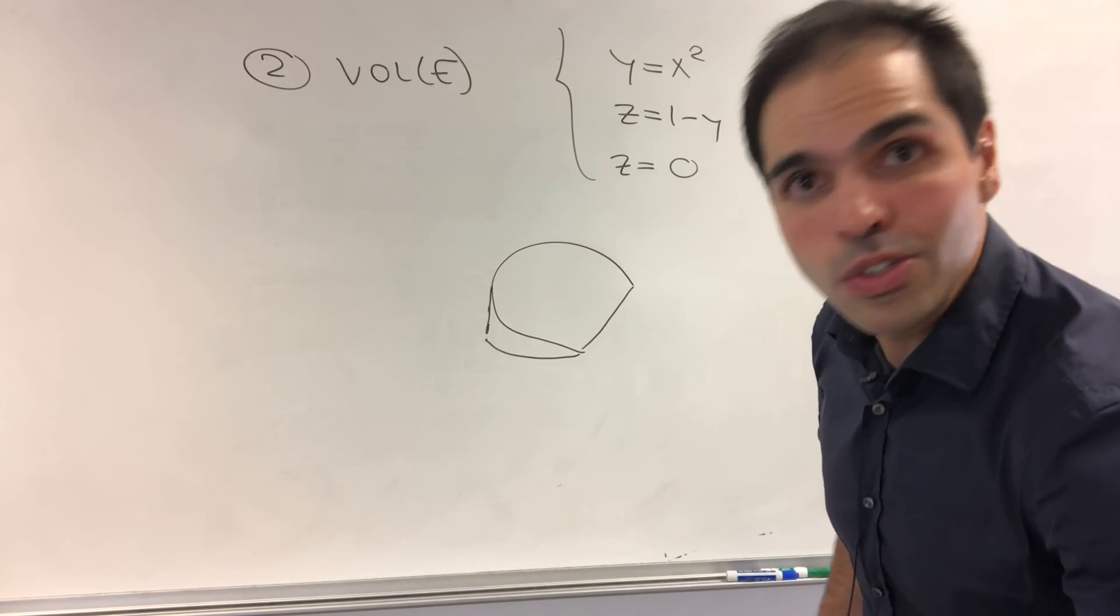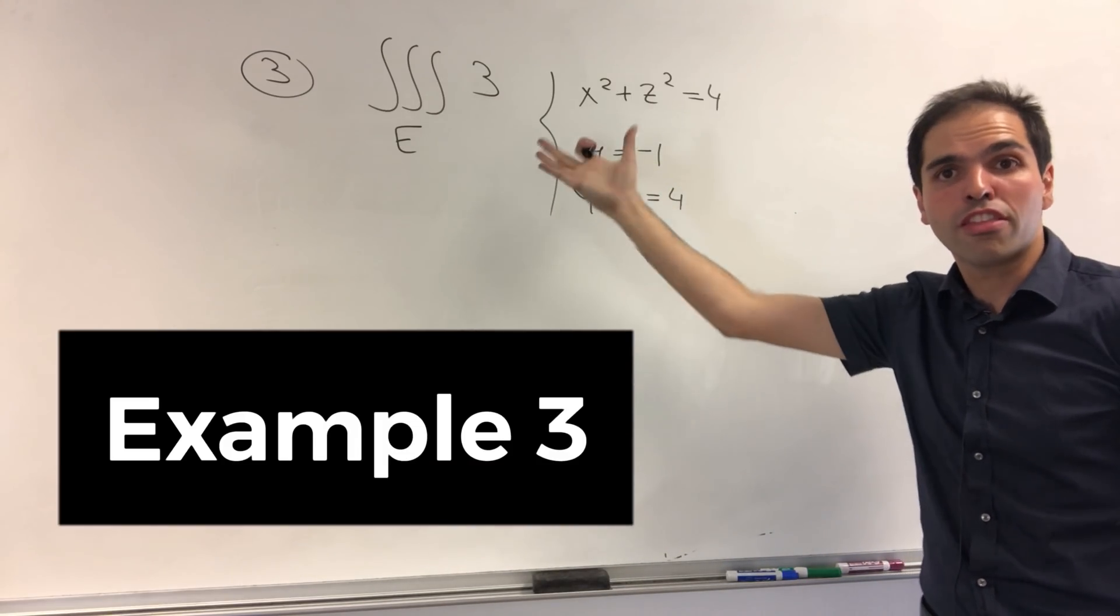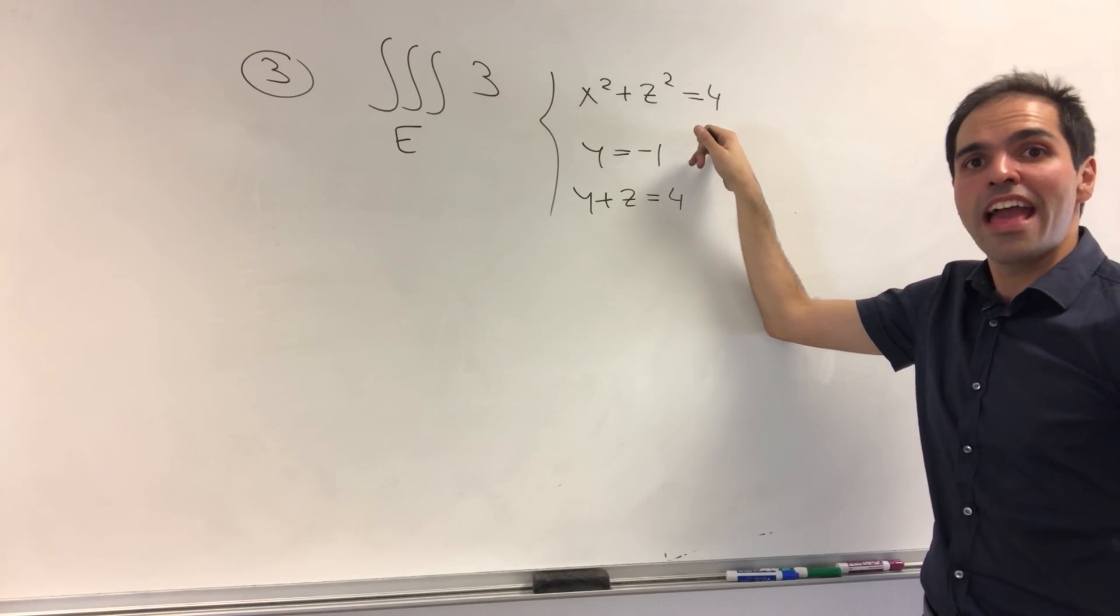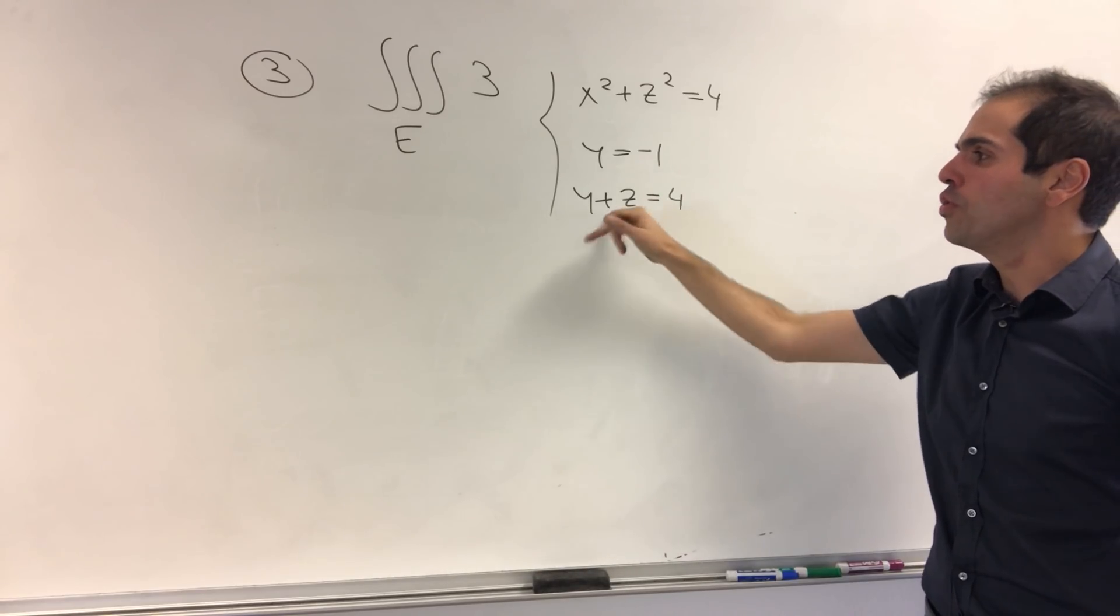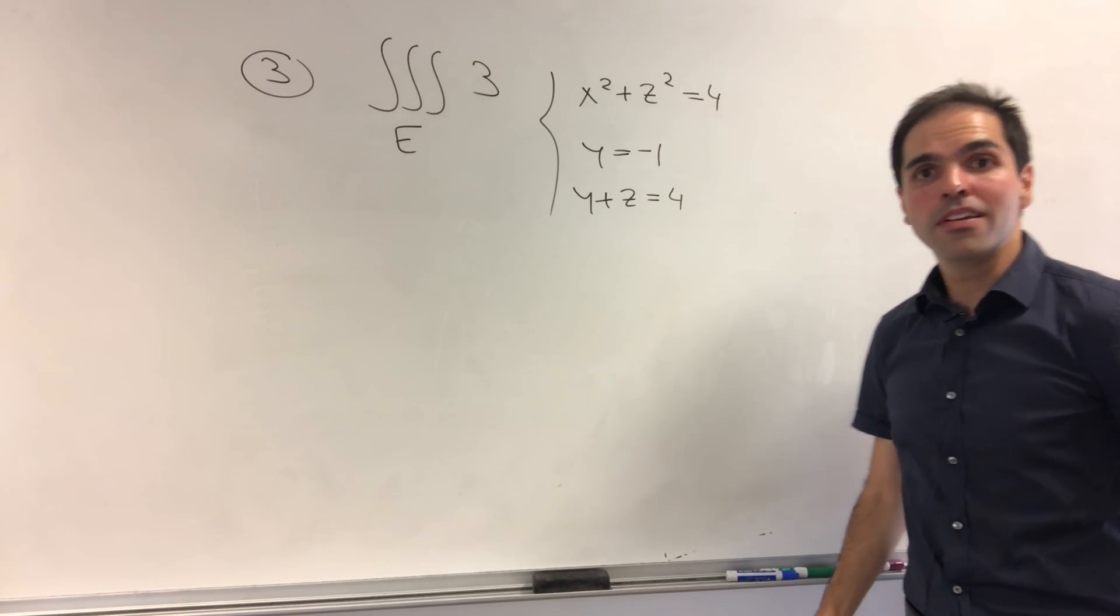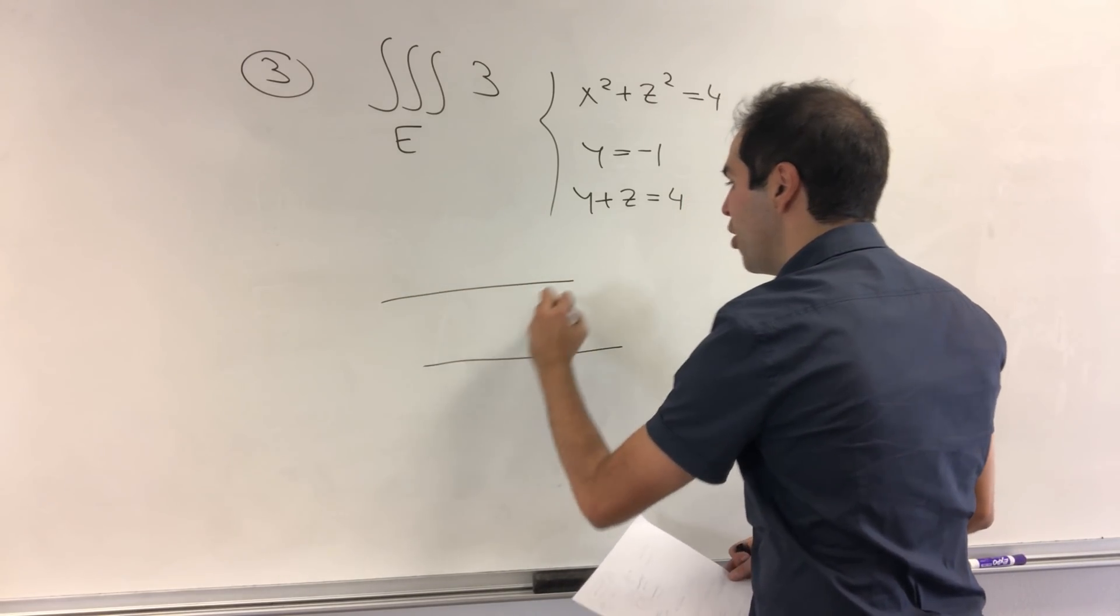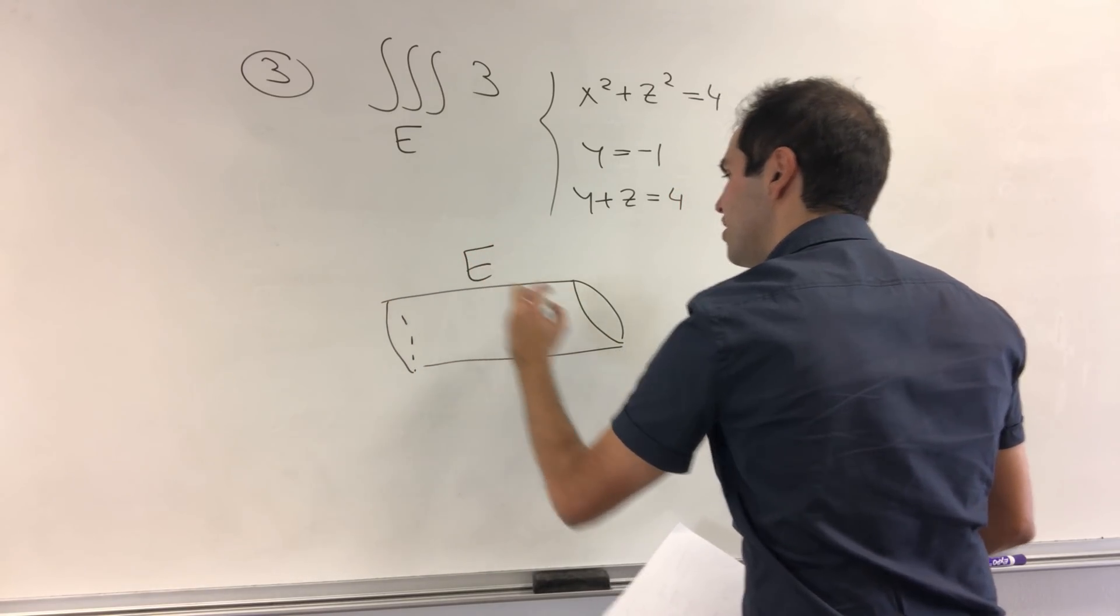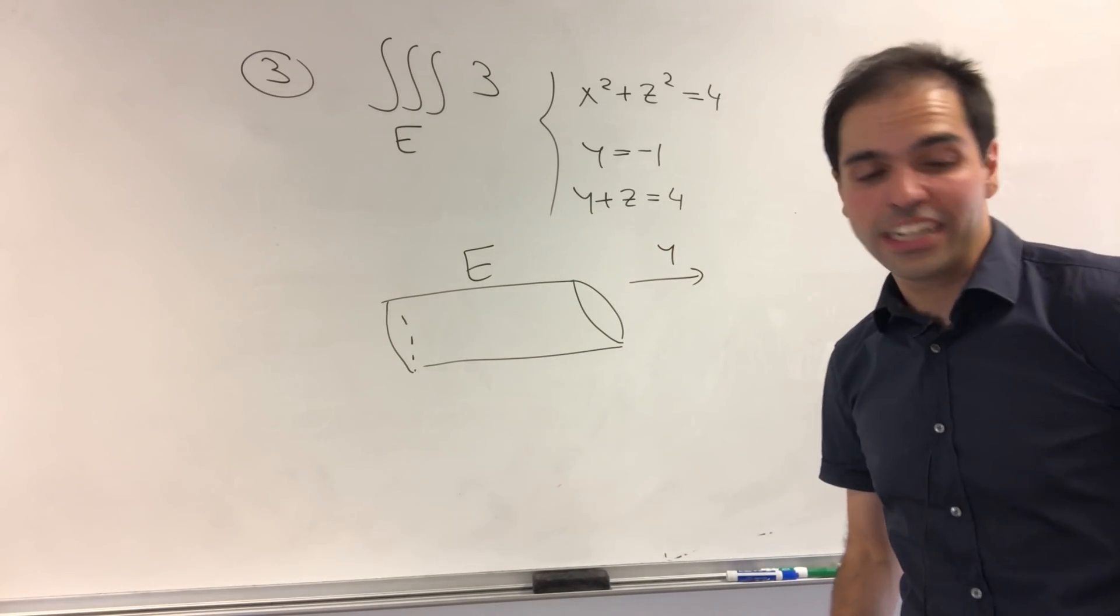Now, the next one has to do with different directions. So try to find a triple integral of 3 or any function you want where the region is bounded by the cylinder x squared plus z squared equals 4, and the planes y equals minus 1, and y plus z equals 4. Then what it looks like, it looks like a cannoli like this. And this is a great illustration of what happens when you have something in the y direction.